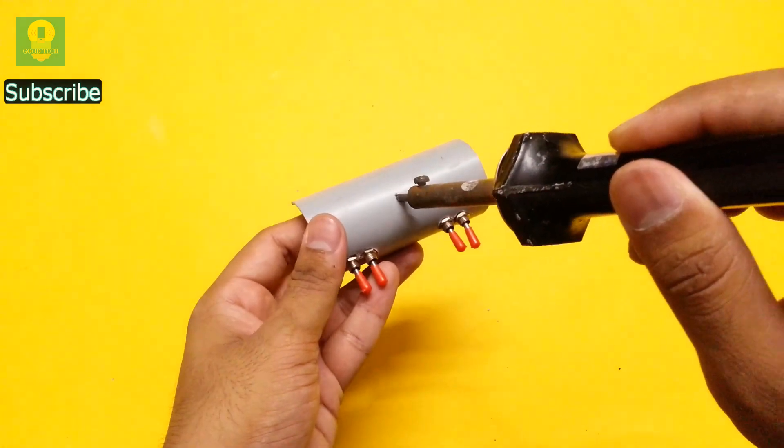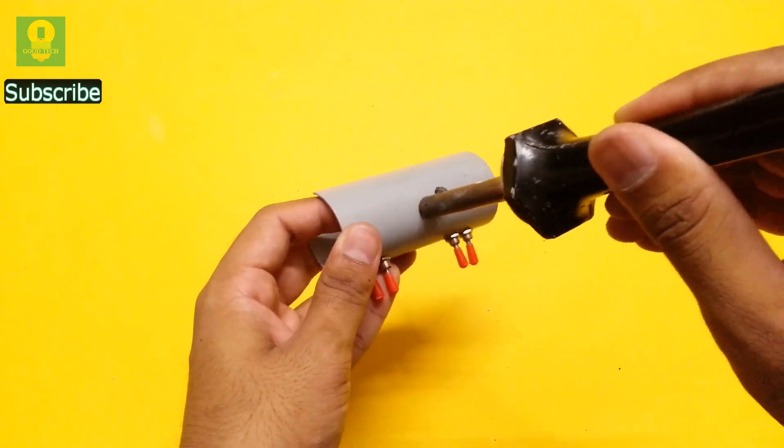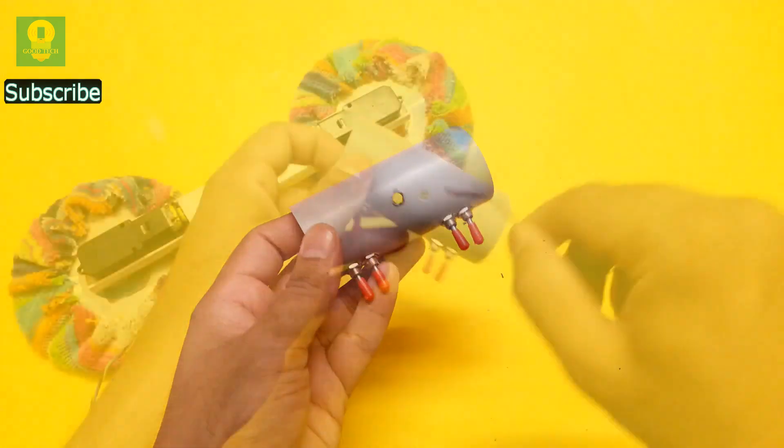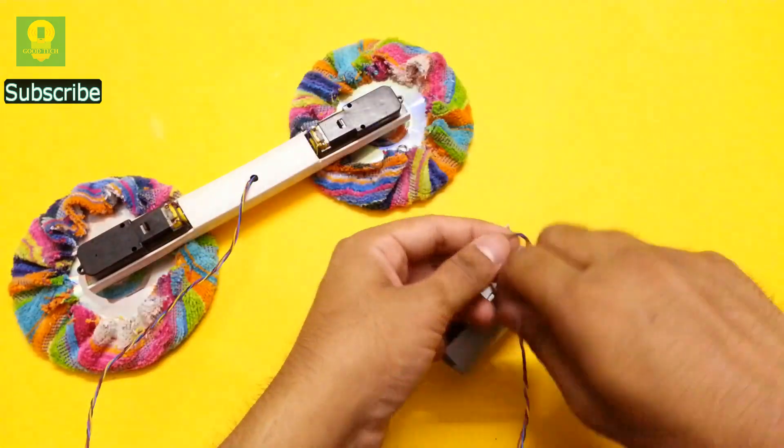Now make another hole at the center of the PVC pipe. Insert the wires through the hole and tie a knot.